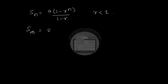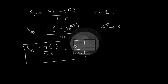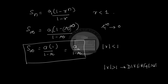So S-infinity = a · (1 - R^∞) / (1 - R). Since R is less than 1, a number less than 1 raised to an infinite power becomes a very small number — essentially R^∞ approaches 0. Therefore S-infinity simplifies to A / (1 - R), which is the formula for the sum of infinite terms of a convergent geometric series: S = A₁ / (1 - R), where |R| < 1. When |R| is greater than 1 the series is divergent and we cannot find a finite sum.